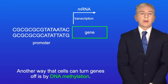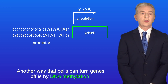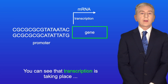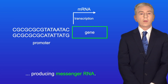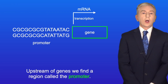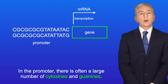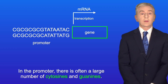Another way that cells can turn genes off is by DNA methylation. Here we have a gene where transcription is taking place, producing messenger RNA — in other words, this gene is active. Now upstream of genes we find a region called the promoter, and in the promoter there's often a large number of cytosines and guanines.